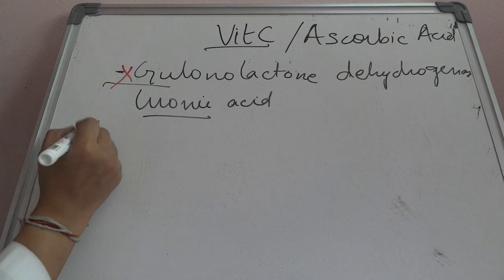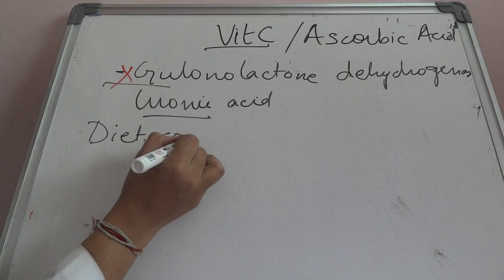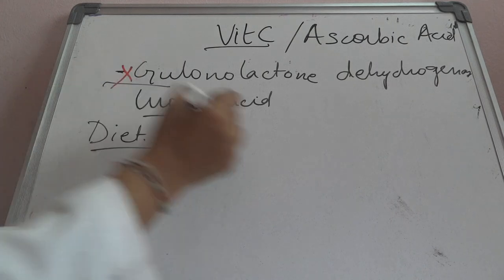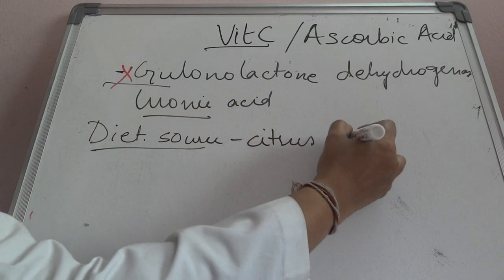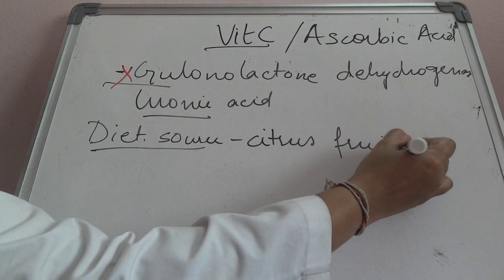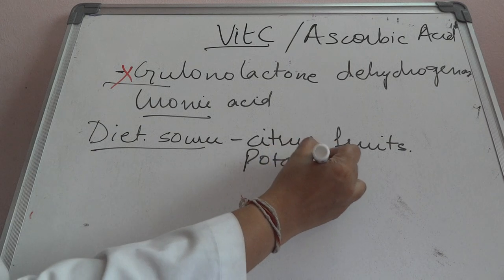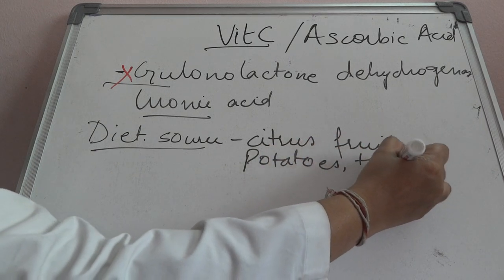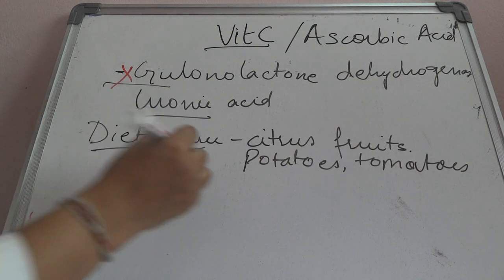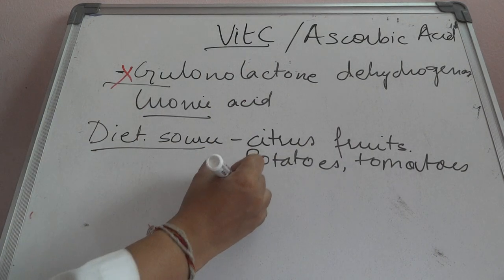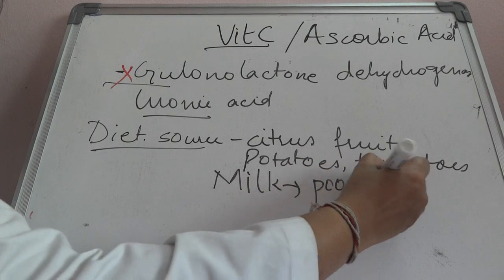Coming to the dietary sources, vitamin C is present in all citrus fruits, gooseberry, and amla. It is also present in potatoes, potato skin, and tomatoes. Milk is a very poor source of vitamin C.